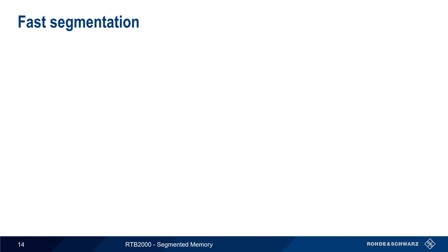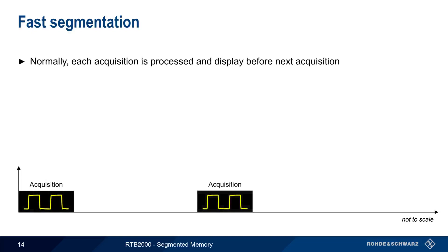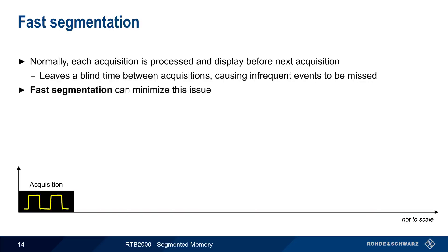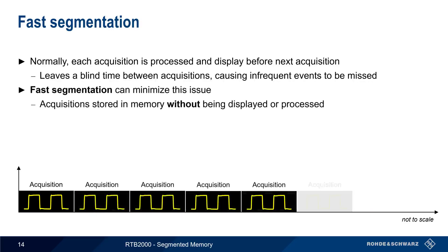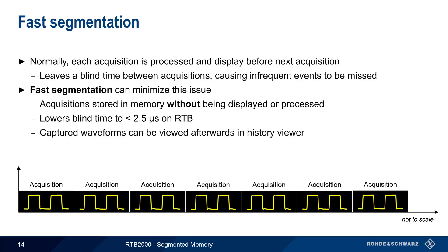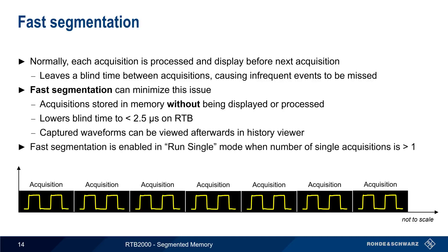An additional feature in History mode is something called Fast Segmentation. When an oscilloscope performs an acquisition, normally each acquisition is processed and displayed before the next acquisition occurs. The time needed to process and display an acquisition creates a blind time during which the scope is not acquiring, and this can lead to infrequent events being missed. When Fast Segmentation is enabled, acquisitions are stored in memory without being displayed or processed. On the RTB, Fast Segmentation lowers blind times to 2.5 microseconds or less. Note that Fast Segmentation must be run in Single Acquisition mode, but with the number of single acquisitions set to greater than 1.